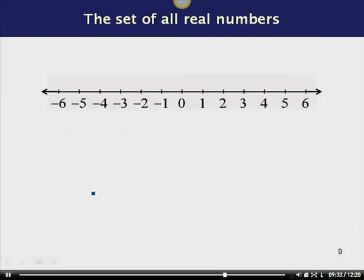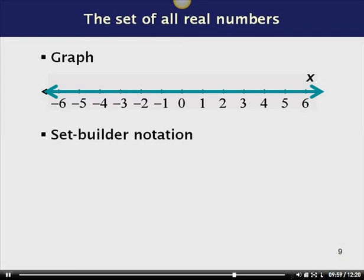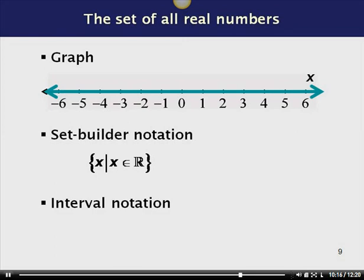Now let's consider the set of all real numbers. We shade the entire number line with arrows at both sides to indicate the set goes on forever in both directions. In set builder notation, this is the set of all x such that x is a real number — often written with a boldface R in textbooks. Since there are no left or right endpoints, in interval notation we use negative infinity and infinity, both with parentheses: (−∞, ∞).